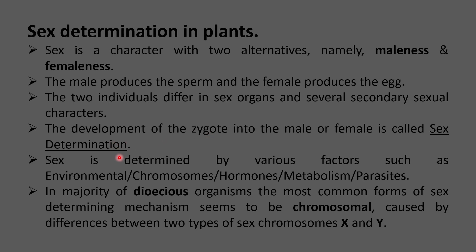When the two gametes fuse or get fertilized and produce the zygote, the zygote can be either male or female. The development of a zygote into male or female is defined as sex determination. Sex can be determined by various factors such as environmental factors, chromosomes, hormones, metabolism, and parasites. The most common form of sex-determining mechanism is chromosomal, caused by differences between the two types of sex chromosomes, X and Y.